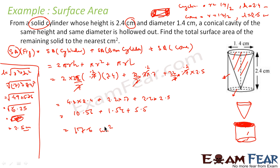We broke this figure into a cone and a cylinder. We found this was a solid cylinder, so we take the curved surface area and base area. Then we got this cone — it is hollow at the top — so we ignored the base area of that part because it is hollowed out. We took the curved surface area of the cylinder and the lateral surface area of the cone.